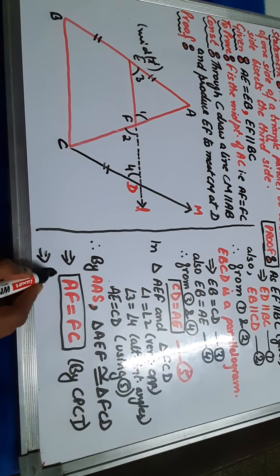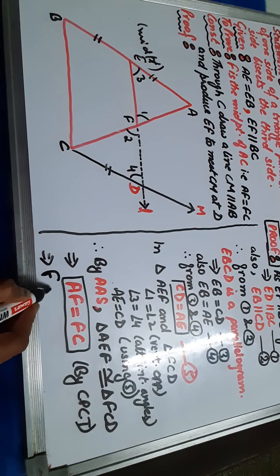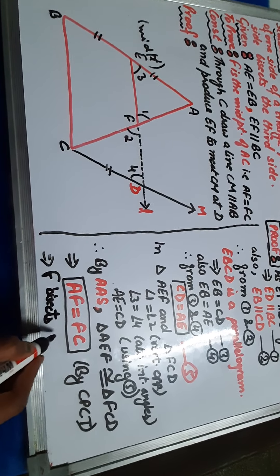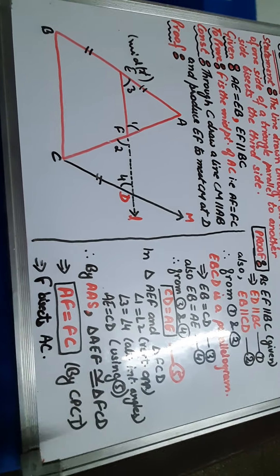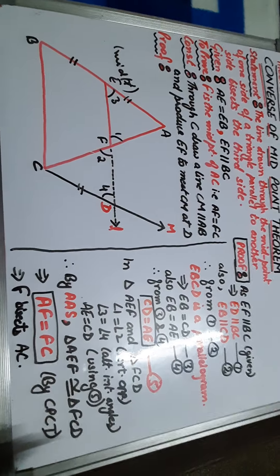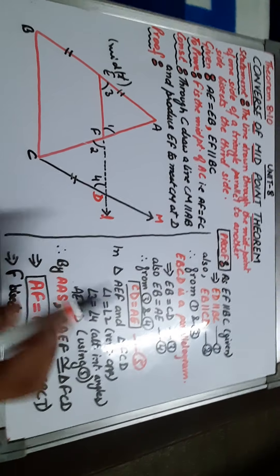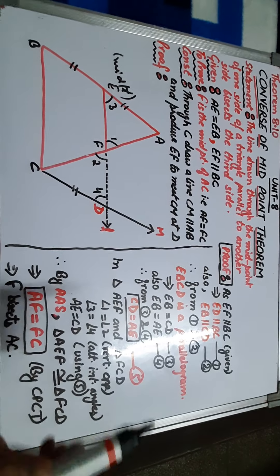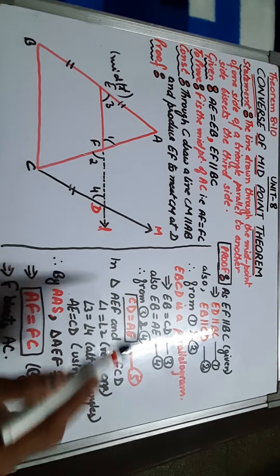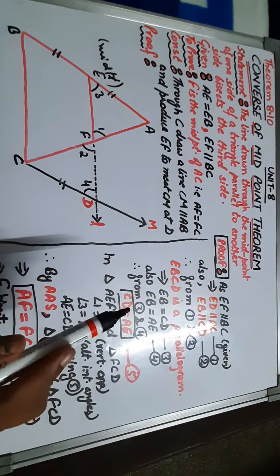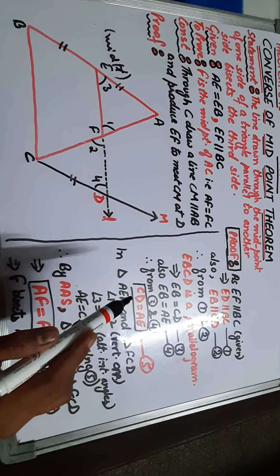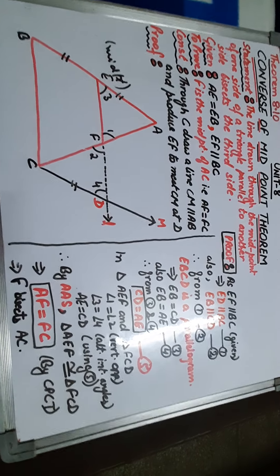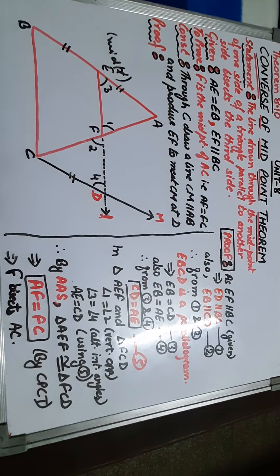This implies F bisects the third side of the triangle, that is AC. Hence proved. The proof is very easy and it is as important as the midpoint theorem. Both theorems are very important, so practice this theorem, my dear students. Thank you.